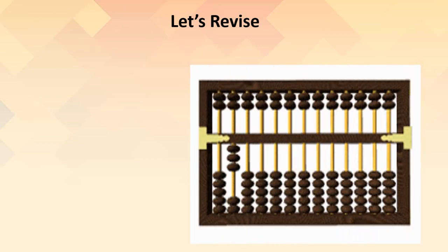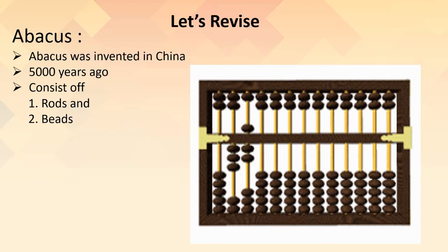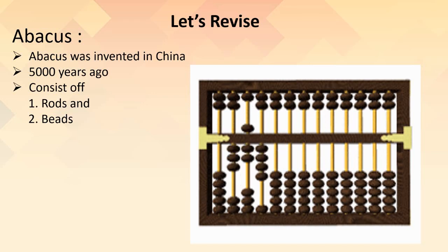This is the Abacus. Abacus is a manual device developed in China. It was made up of a wooden frame consisting of rods, each having beads on them. The frame was divided into two parts: heaven and earth. Each rod in heaven had two beads and each rod in earth had five beads. It was used for addition, subtraction, multiplication and division. The abacus is still used as a calculating device in many countries like Japan and Russia. One can do very big calculations very quickly using an abacus.